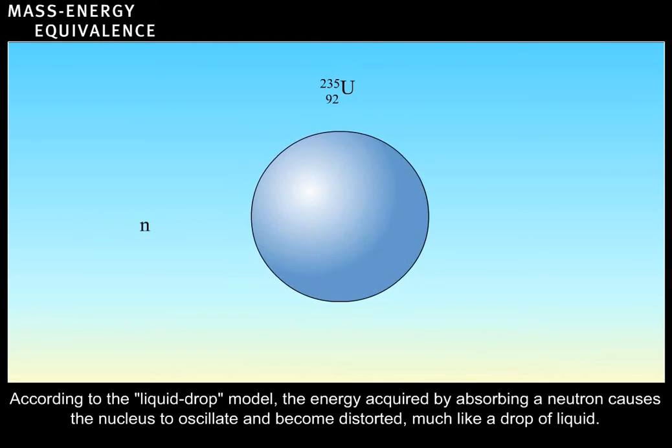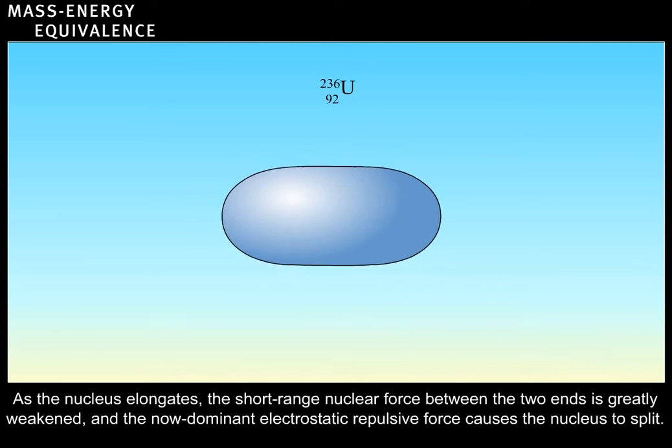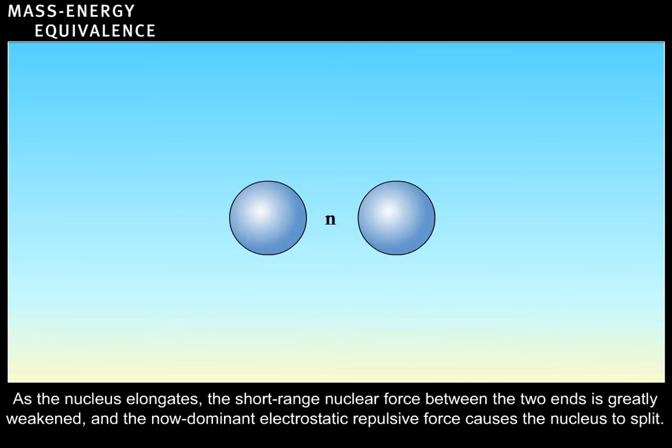According to the liquid drop model, the energy acquired by absorbing a neutron causes the nucleus to oscillate and become distorted, much like a drop of liquid. As the nucleus elongates, the short-range nuclear force between the two ends is greatly weakened, and the now dominant electrostatic repulsive force causes the nucleus to split.